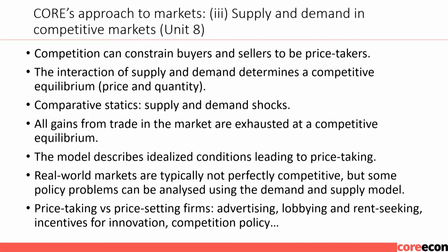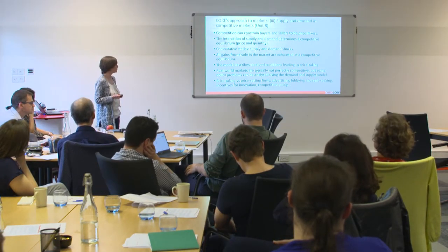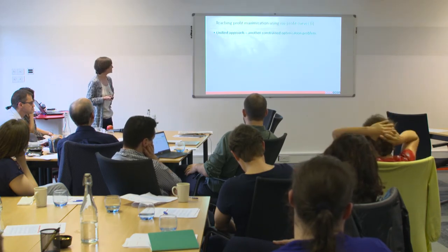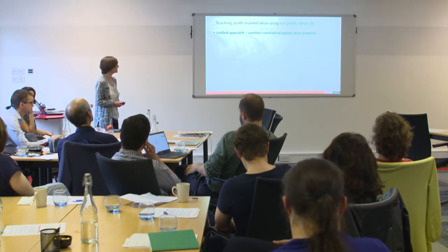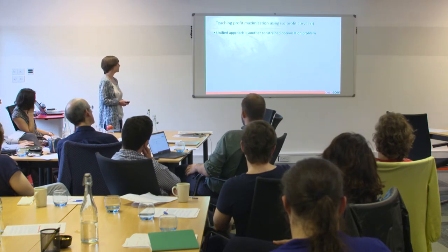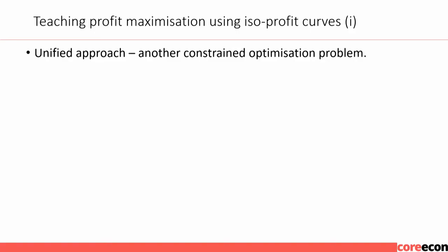In unit eight we move from price-setting to price-taking as the limiting case, covering supply and demand curves and their interaction. Later in the course there's considerable attention given to how markets actually reach competitive equilibrium — not usually stressed in introductory courses. We do the traditional comparative statics — supply and demand shocks — applied to real examples, including what happened in the market for quinoa when it became a worldwide market, gains from trade, and discussing to what extent perfectly competitive markets are actually found in practice.